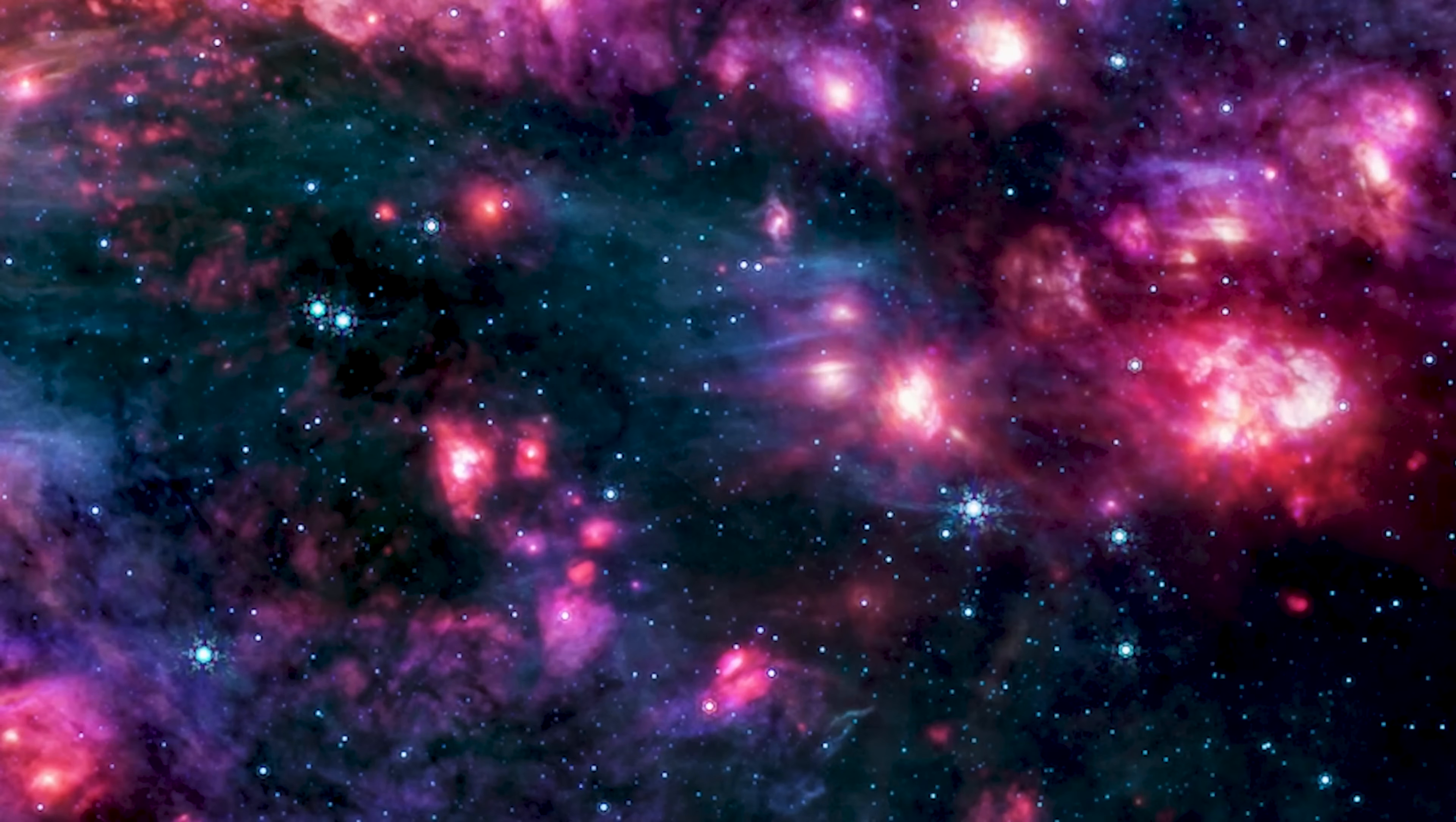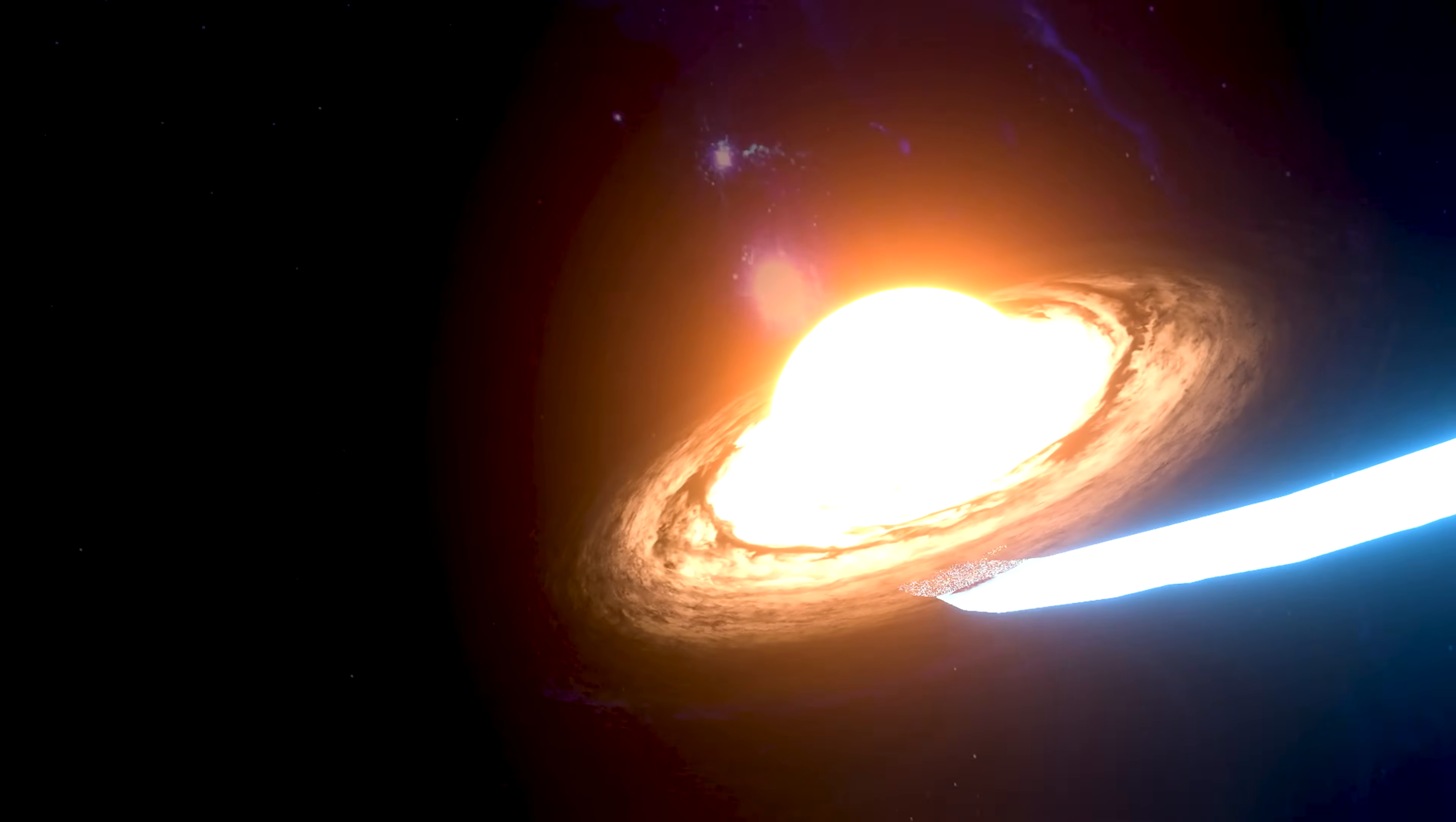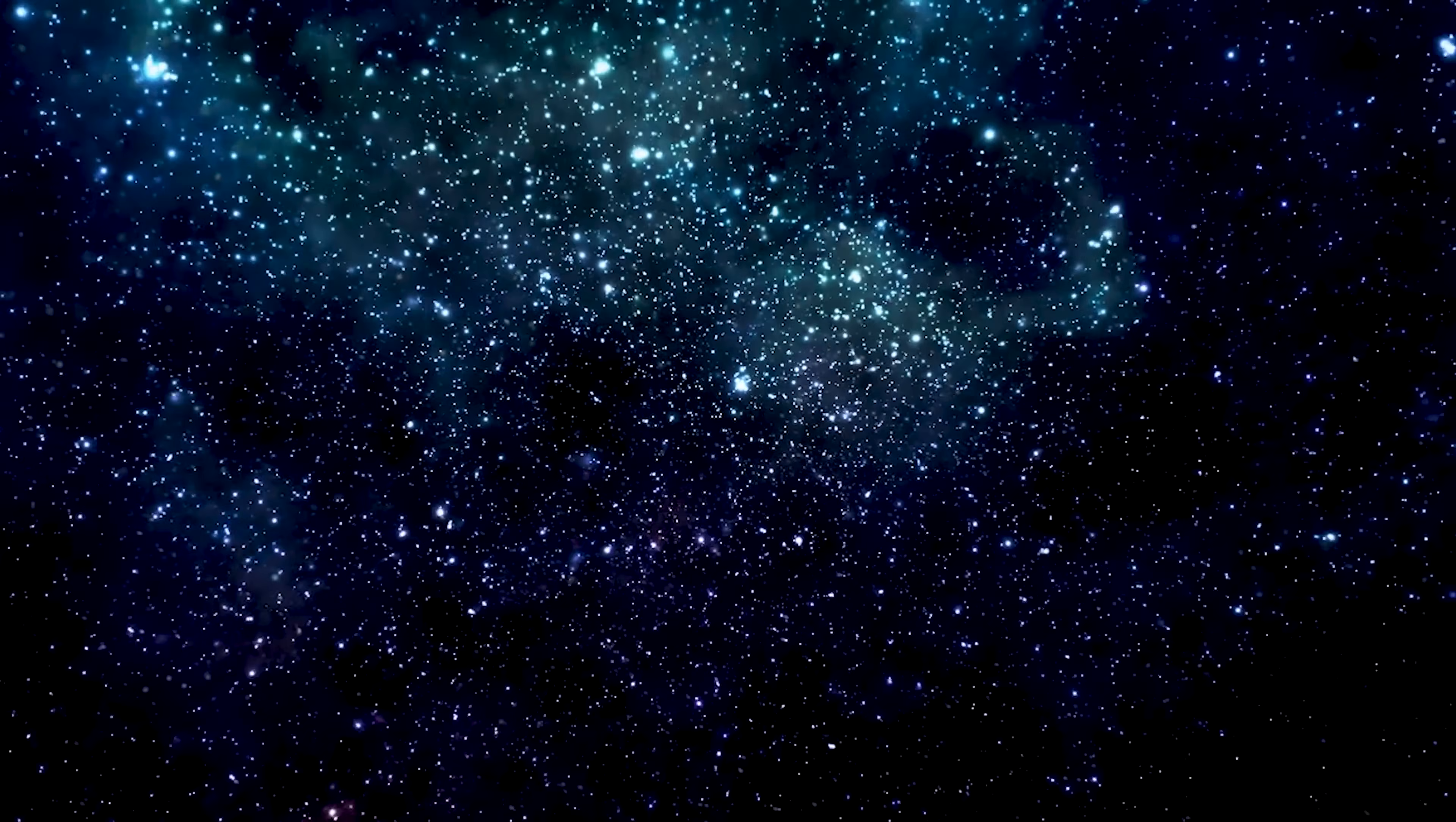Webb is also revealing the profound interplay between stars, dust, and black holes. In some galaxies, we see massive central black holes surrounded by swirling disks of gas, shaping their host galaxies in ways we barely understand. Stars are born, live, and die, scattering material that forms the next generation, a cosmic cycle of creation unfolding in real time.